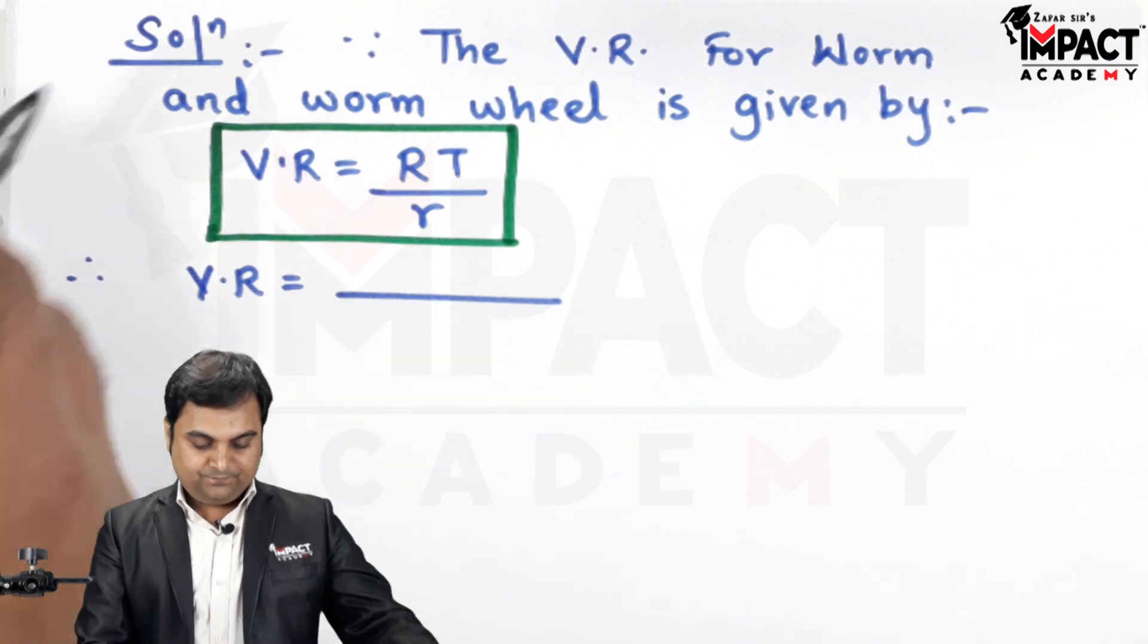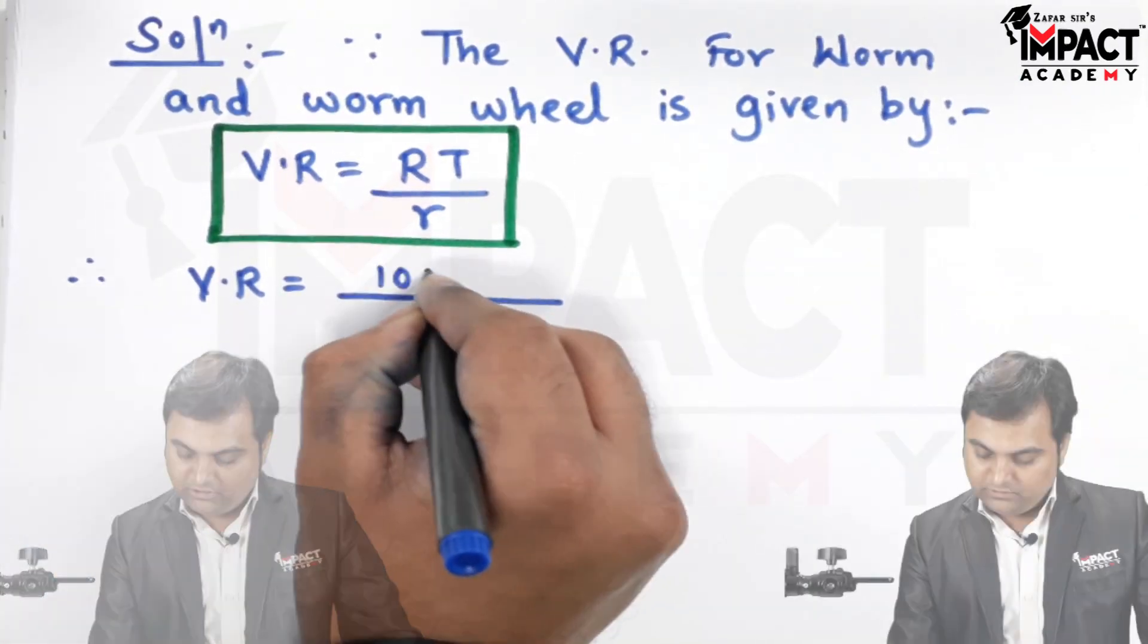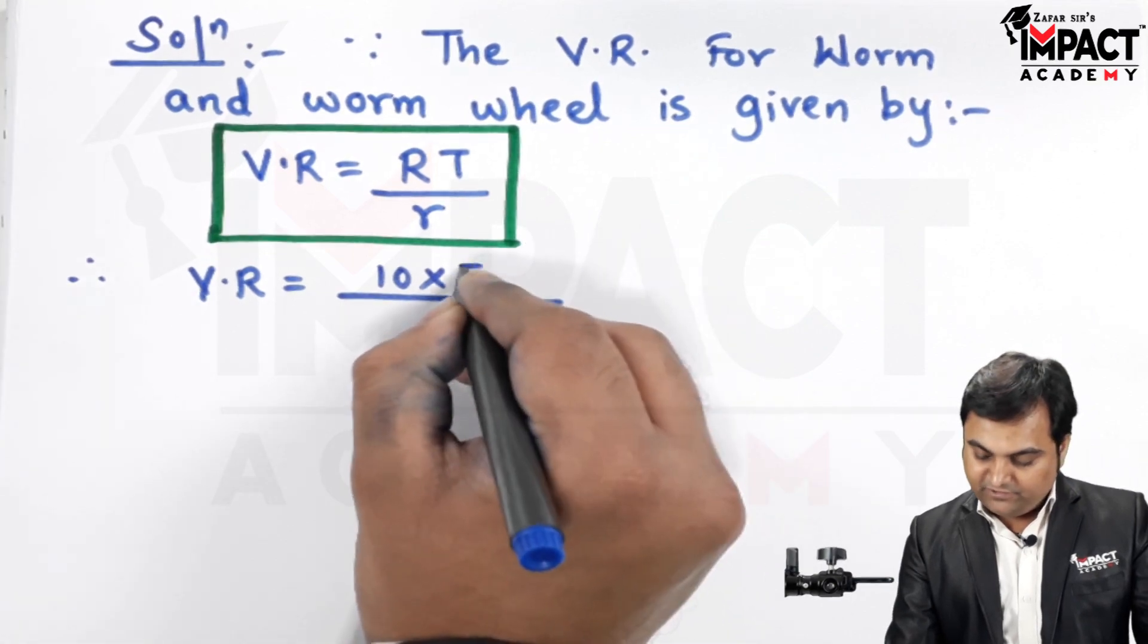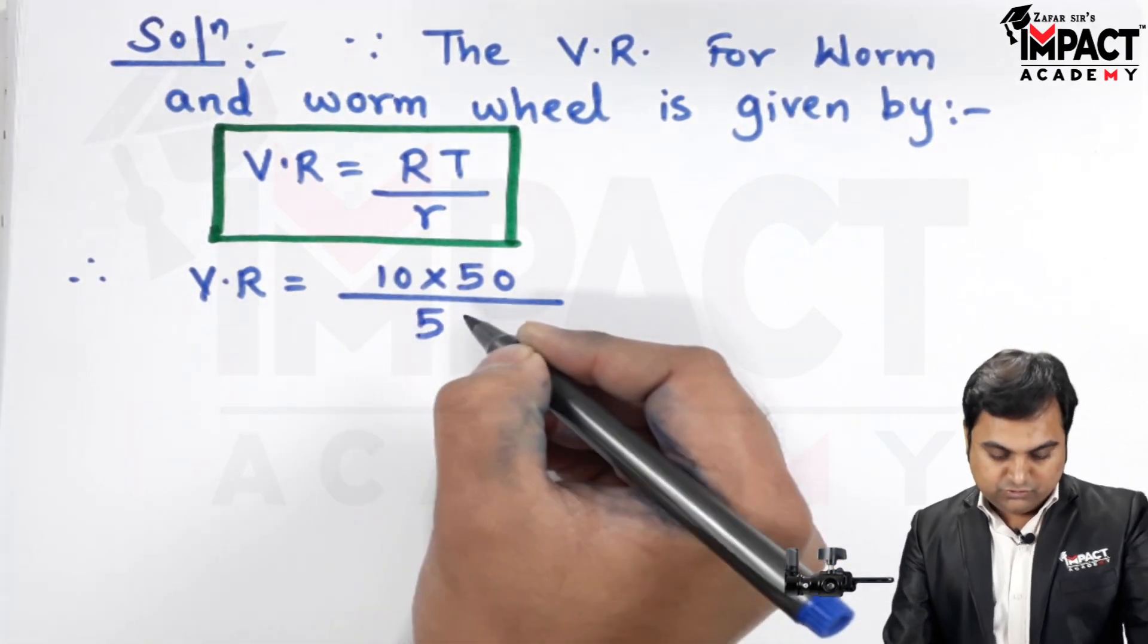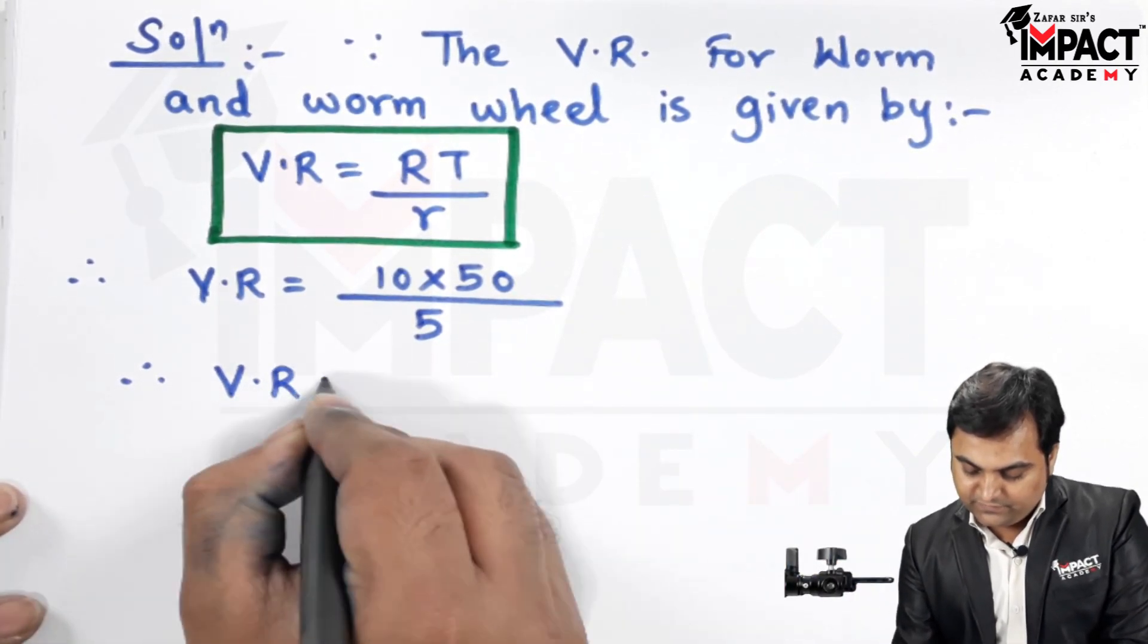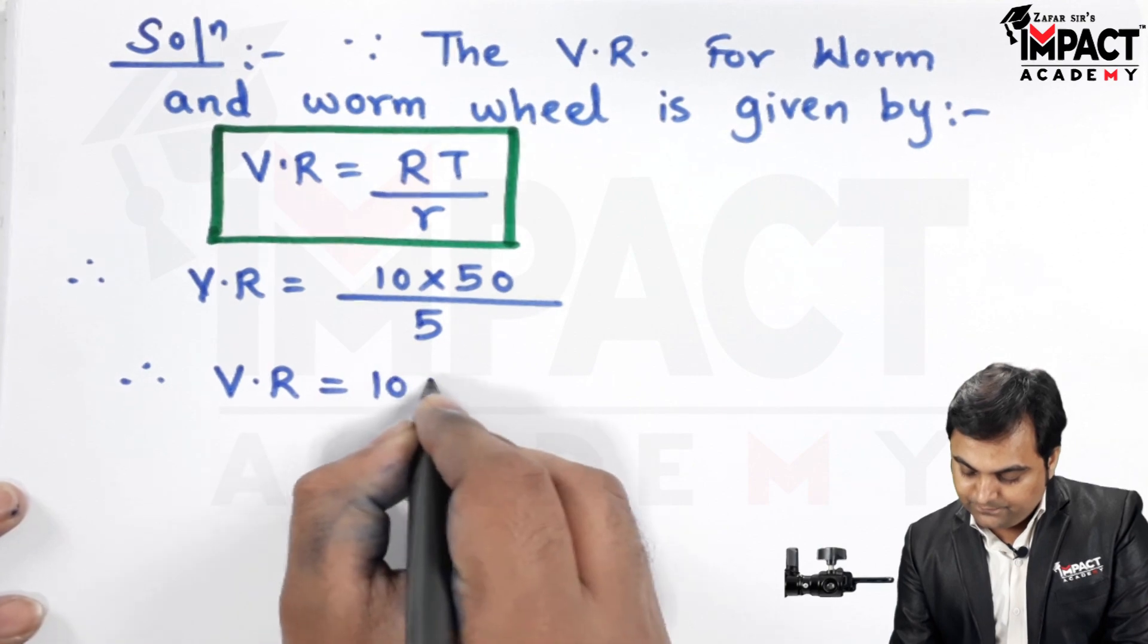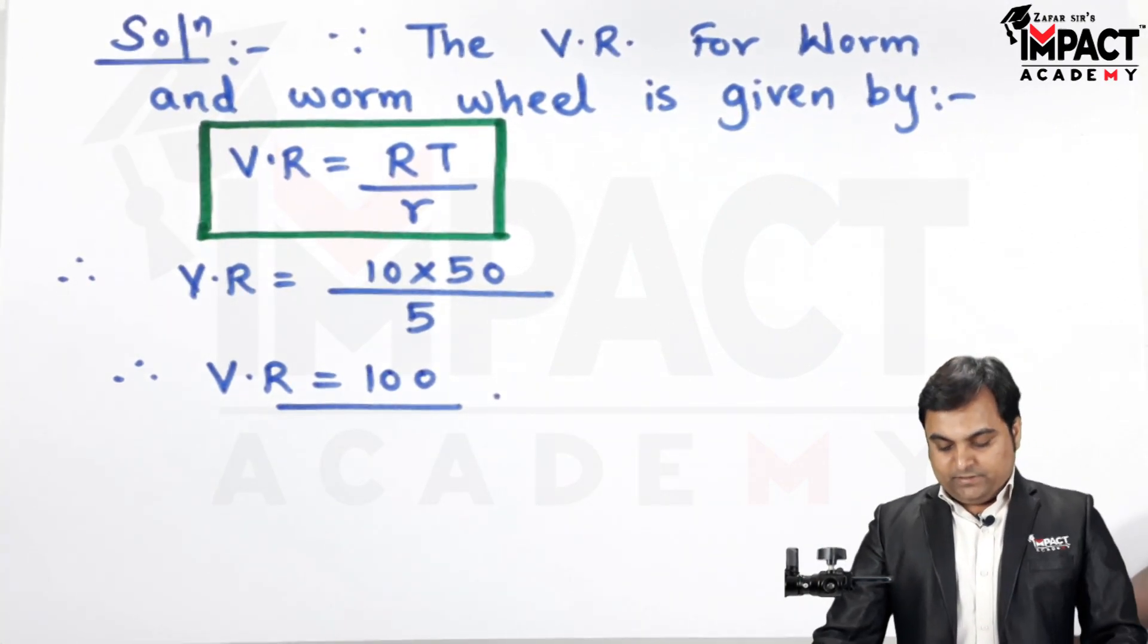Now capital R, it is 10, the number of teeth is given as 50, small r is 5. So from this I'll get the velocity ratio and my answer is 100, and velocity ratio doesn't have a unit.